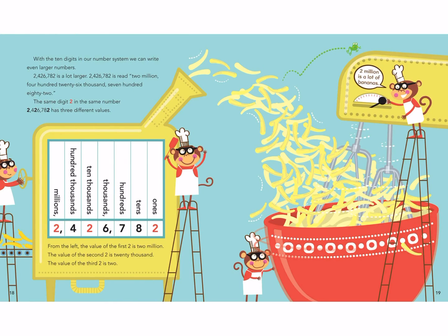With the 10 digits in our number system, we can write even larger numbers. The number 2,426,782 — the same digit 2 appears three times in this number but has different values. From the left, the value of the first 2 is 2,000,000 — it's in the millions place. The value of the second 2 is 20,000 because it's in the ten-thousands place, and two ten-thousands equals 20,000. The value of the third 2 is just 2. Two million is a lot of bananas.